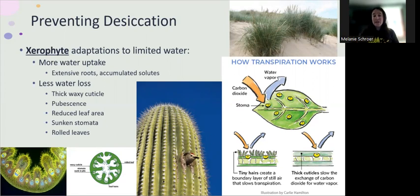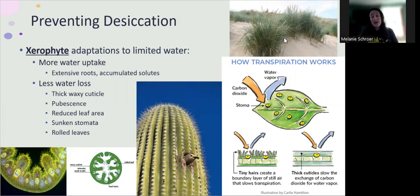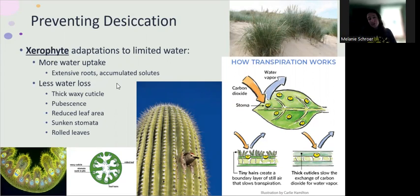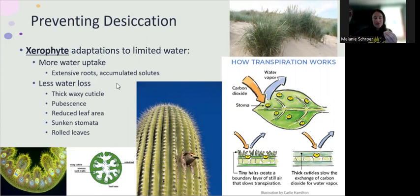A different strategy: these desert grasses and many other native desert grasses take the other option — they have really long roots. Instead of branching out, they actually grow all the way down to the water table and are able to tap into that resource all the time. In both strategies, the roots actually accumulate solutes. If you remember how osmosis works, water follows salt — water follows the solute. So if the roots are saltier than the surrounding soil, any water is going to be sucked into those roots and therefore feed the plant.